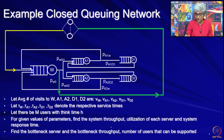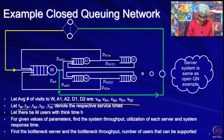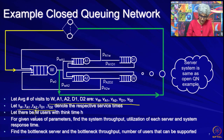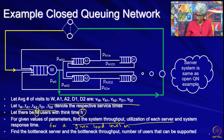For this server subsystem we have the same parameters: the average number of visits V_W, V_A1, V_A2, V_D1, and V_D2, and the per-visit service times tau_W, tau_A1, tau_A2, tau_D1, tau_D2. The difference now is that we have M users with think time H. Our questions include finding the system throughput, utilization of each server, system response time for a given load level M, the bottleneck server, bottleneck throughput, and the number of users that can be supported.